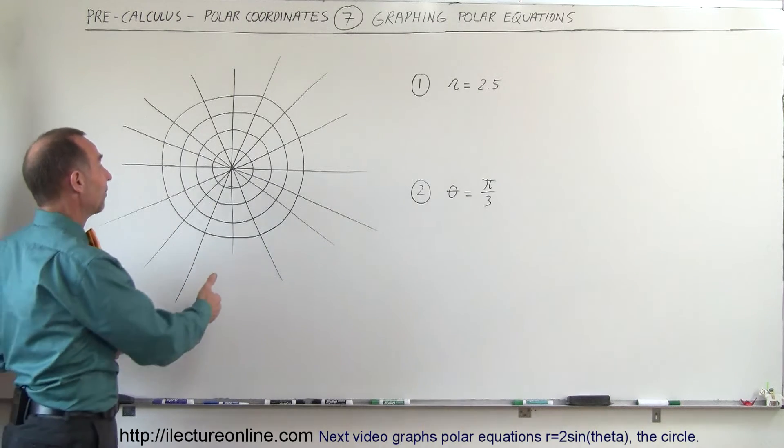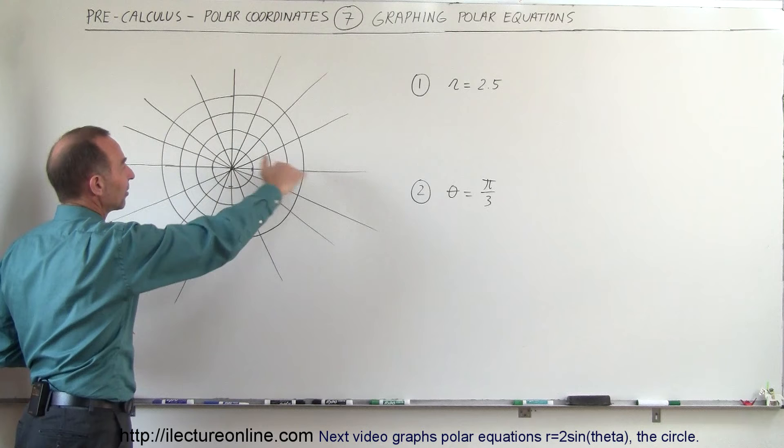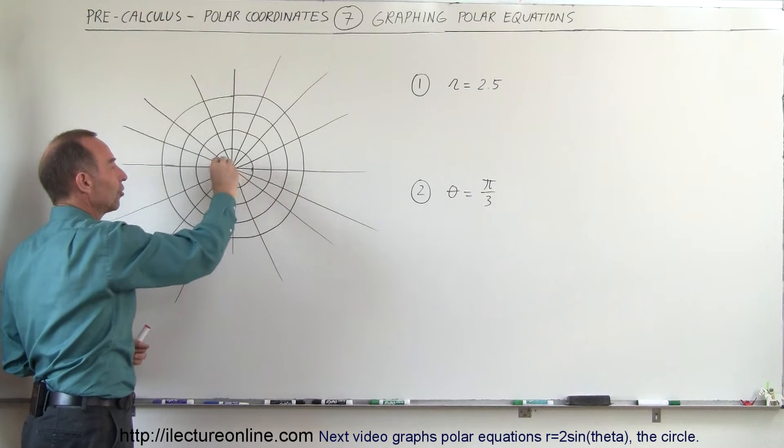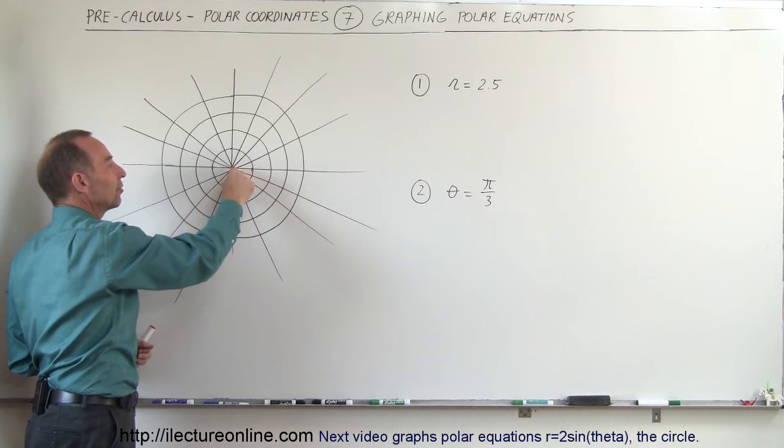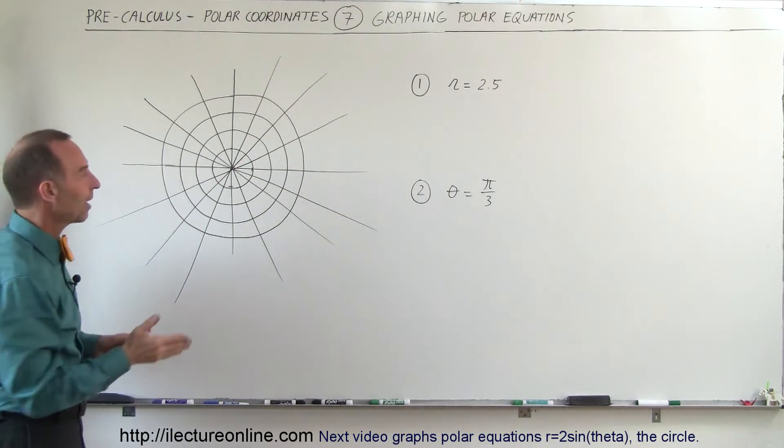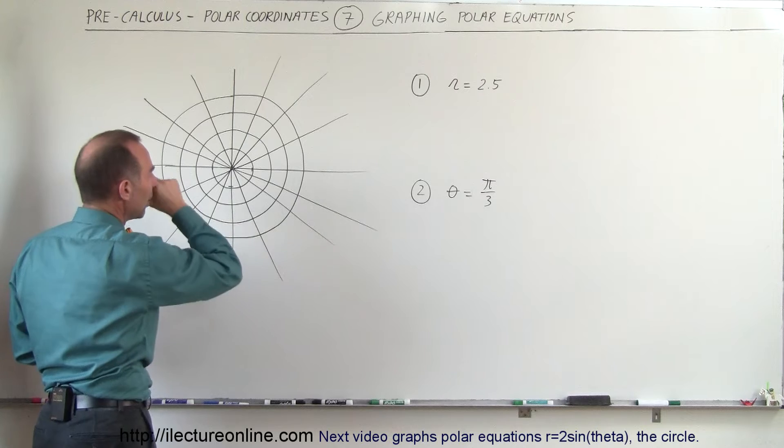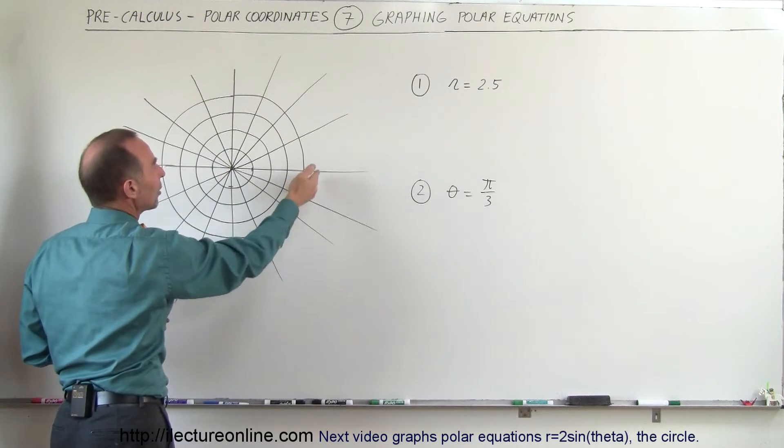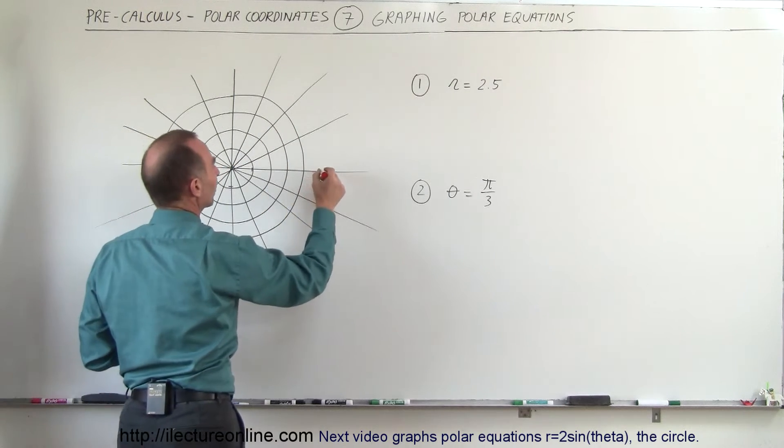Here we still have the y-axis and x-axis, but notice that we have little circles starting from the origin and the radius of each circle is 1 unit, 2 units, 3 units, 4 units and so forth. We also have something that looks like a spider web where we have lines associated with angles relative to the positive x-axis.